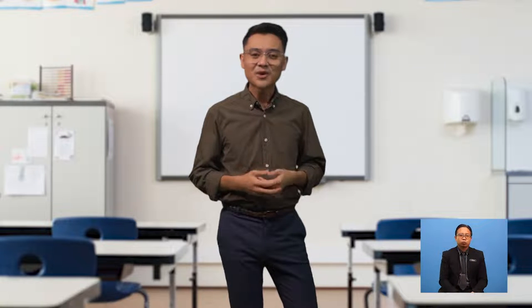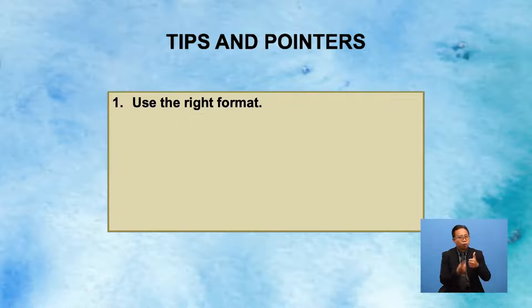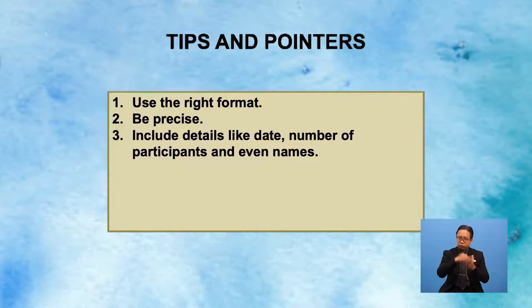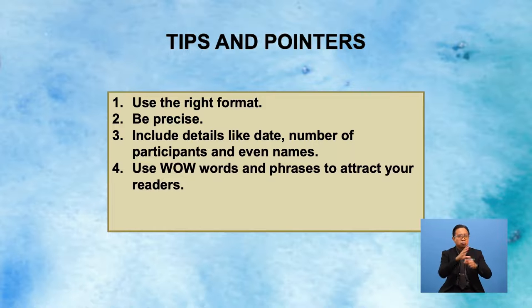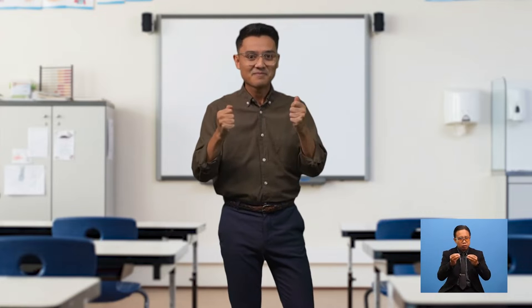Isn't that remarkable? You may want to compile your own report and show it to your teacher. Now Yasmin's report has been published — she has added all the details and corrected her report so that now it is very impressive. Here are some tips to remind ourselves when we write a report for a school magazine: 1. Use the right format. 2. Be precise. 3. Include details like date, number of participants and even names. 4. Use wow words and phrases to attract your readers. 5. Use past tense form. 6. Write to impress. All the best in your SPM, like my teacher always tells us in class. Don't give up — everyone can write. Bye-bye!